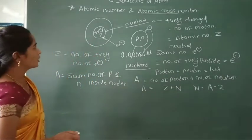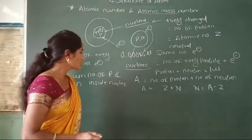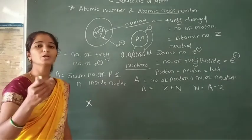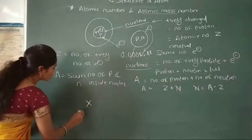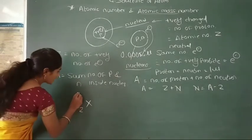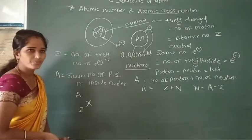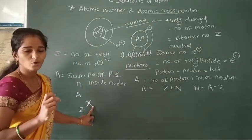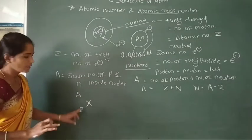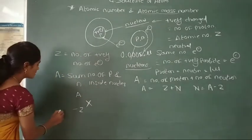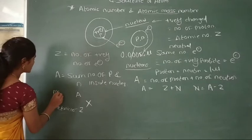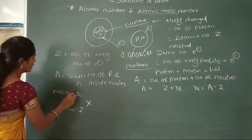Now we will see some examples. Suppose X is any element in the periodic table. The bottom left of X is represented as Z (atomic number), and the top right is represented as A (mass number). Here, Z is the atomic number of any element, and A is the mass number of any element.